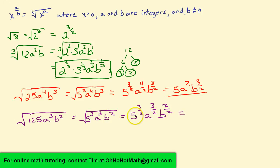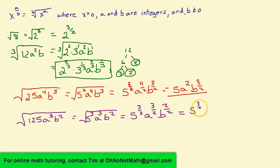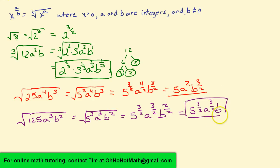That equals 5 to the 3 halves, times a to the 3 halves, times b — because 2 over 2 is 1. And that's it. I hope that helps.